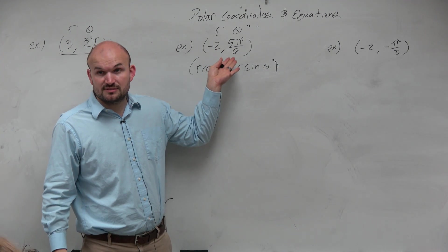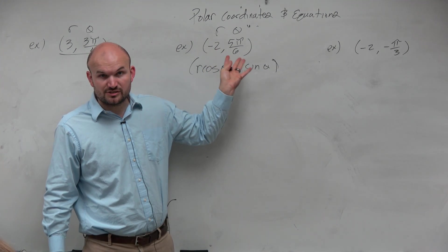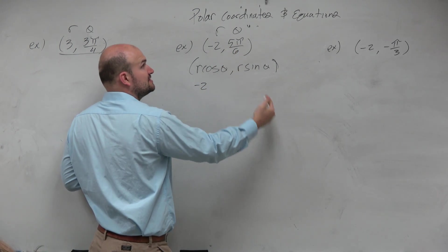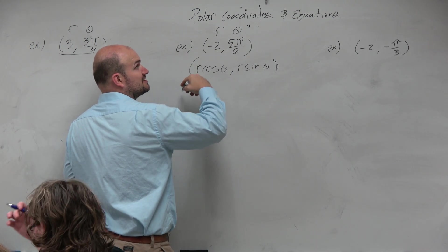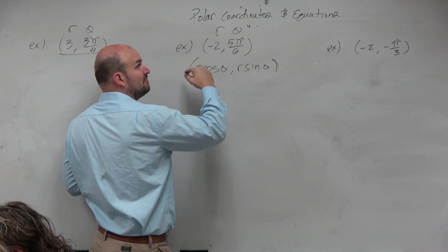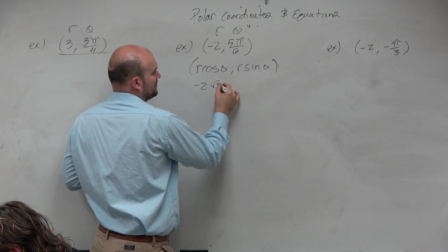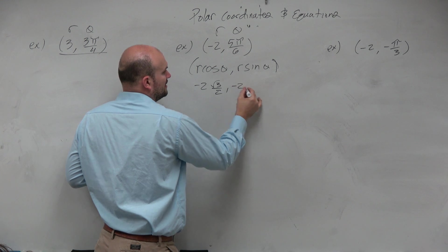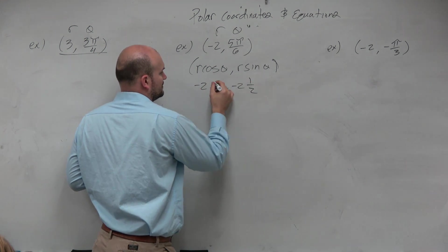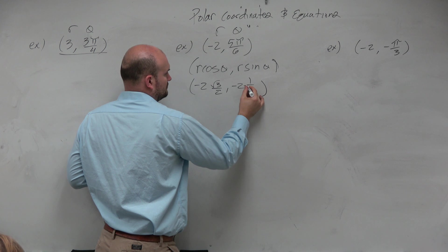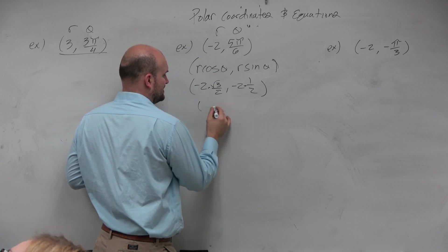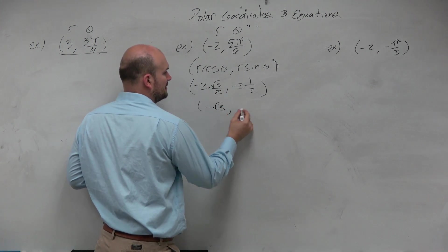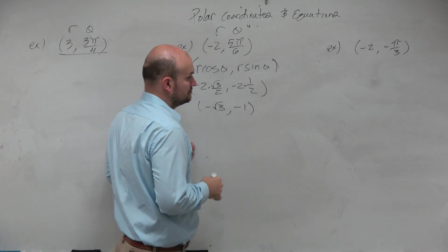Can I just sketch this real quick or figure this out? So this is negative 2, 5π over 6. I've got to know where 5π over 6 is, which is in the second quadrant with a reference angle of π over 6. So that's going to be square root of 3 over 2, and sine is going to be negative 2 times 1 half. So therefore, this is negative square root of 3, negative 1.